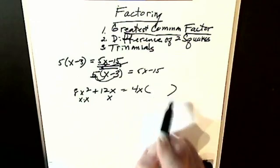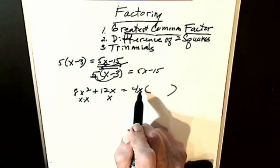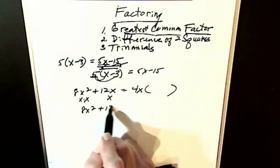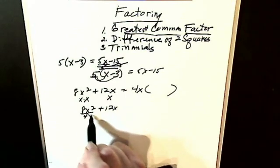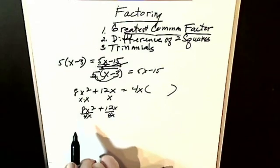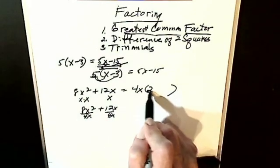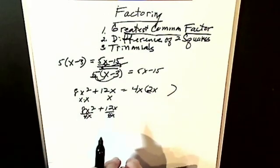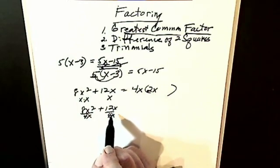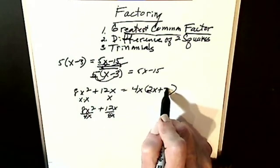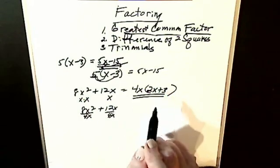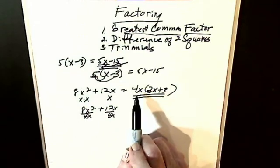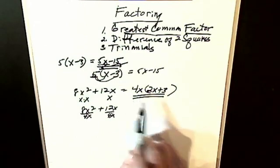To get my insides, I take 4x and divide it into each term. So I have 8x² + 12x, and I divide by 4x. 4 into 8 is 2; x into x² is x. For this term, 4 into 12 is 3, and my x cancels to 1. That's my answer: 4x(2x + 3). I can always check with distributive property — I get 8x² + 12x.